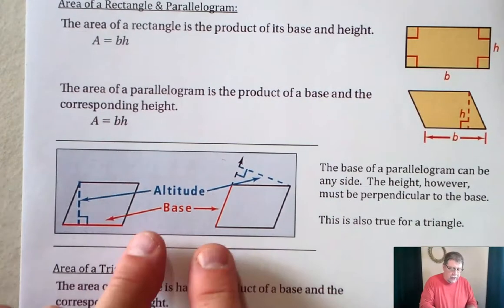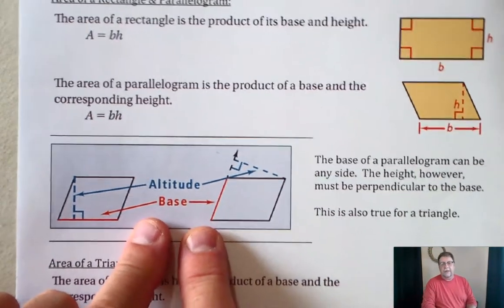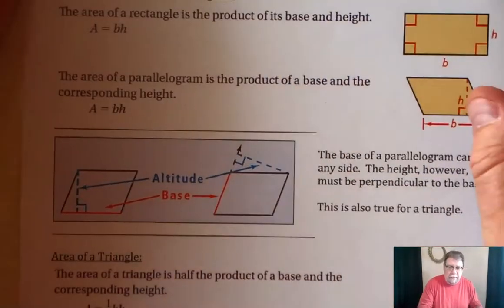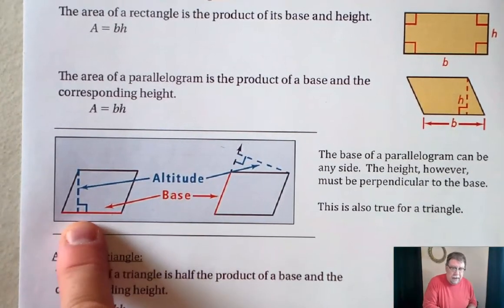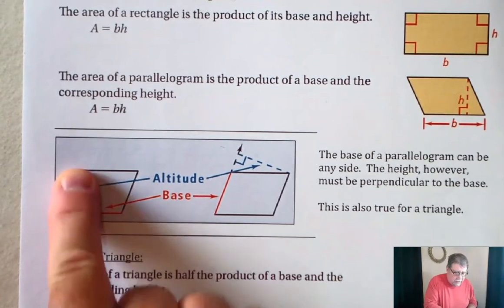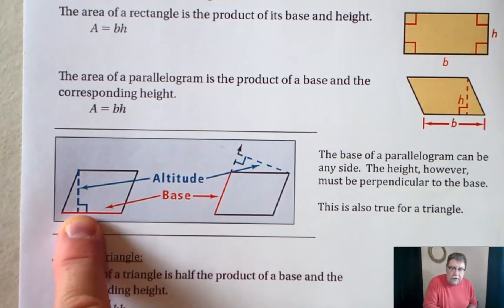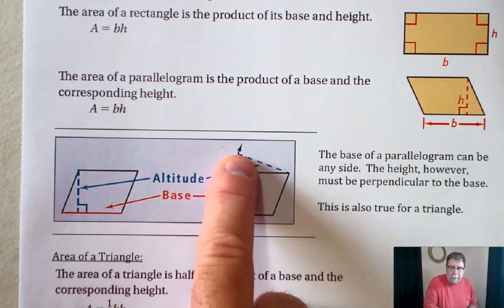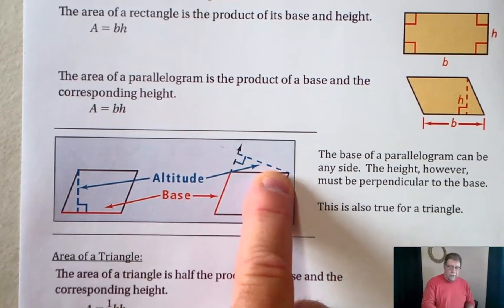So we're also going to take a look here at this concept, because this concept confuses people quite a bit. The base doesn't have to be the bottom. Here the base is the bottom, and the height or the altitude is perpendicular to it. But as long as you just have a line and another perpendicular to it, you can measure that way.